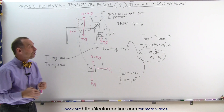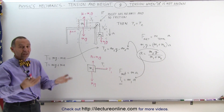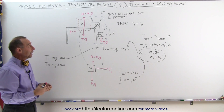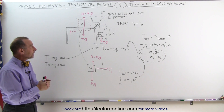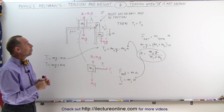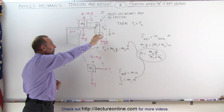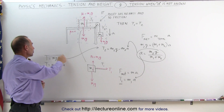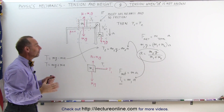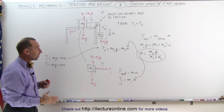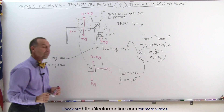So whenever you have a system that is accelerating and you want to find the tension in the strings keeping objects within the system together, you need to find the acceleration first. Once you have the acceleration, if it's a hanging object you can use T equals mg minus or plus ma; if it's a horizontal object, you use the approach T equals m times a. And that's how we find the tension in strings when the acceleration is not known.